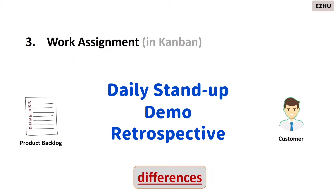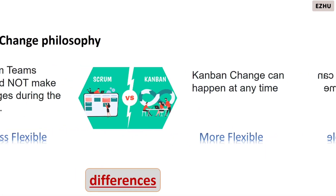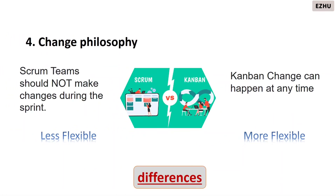Scrum does not permit any changes to requirements during the sprint and tends to be less flexible. On the other hand, kanban permits changes in requirements at any point of time and is more flexible.